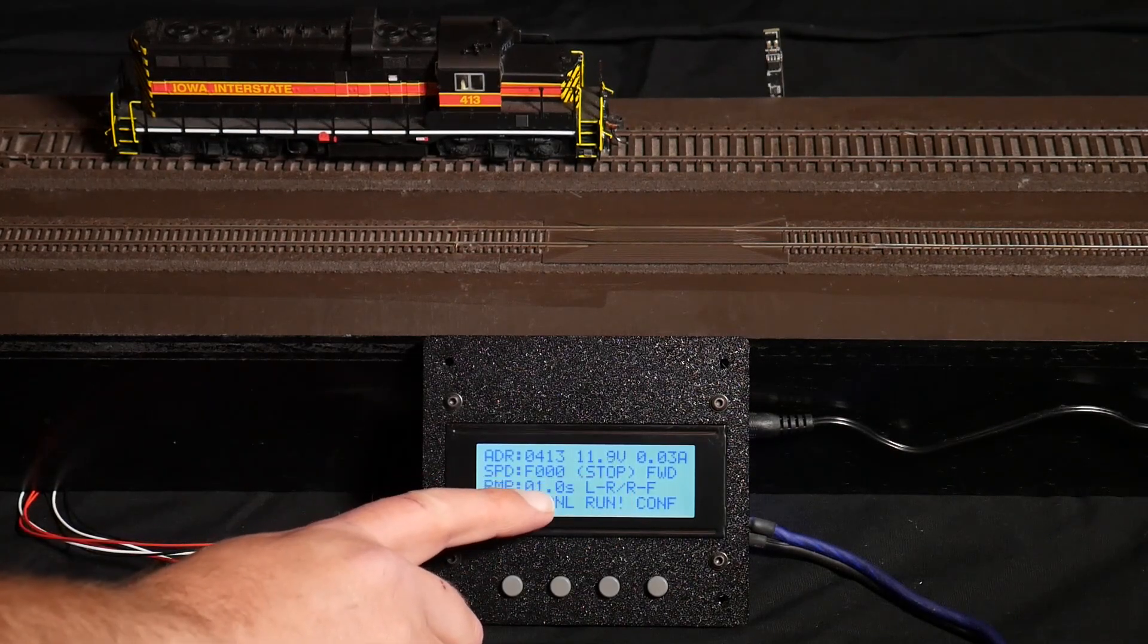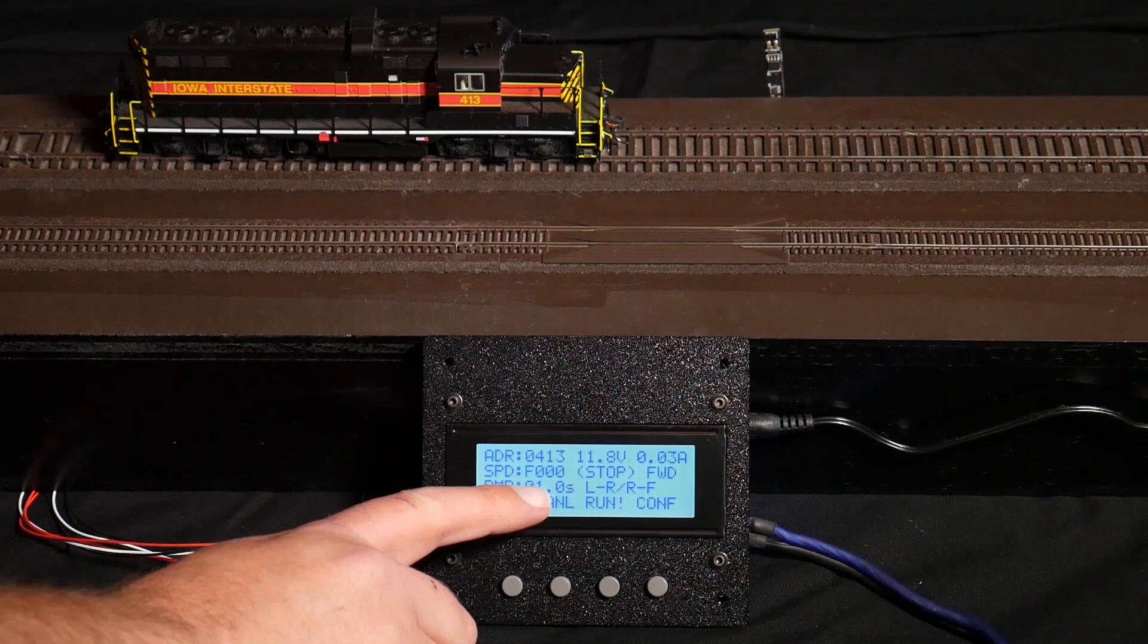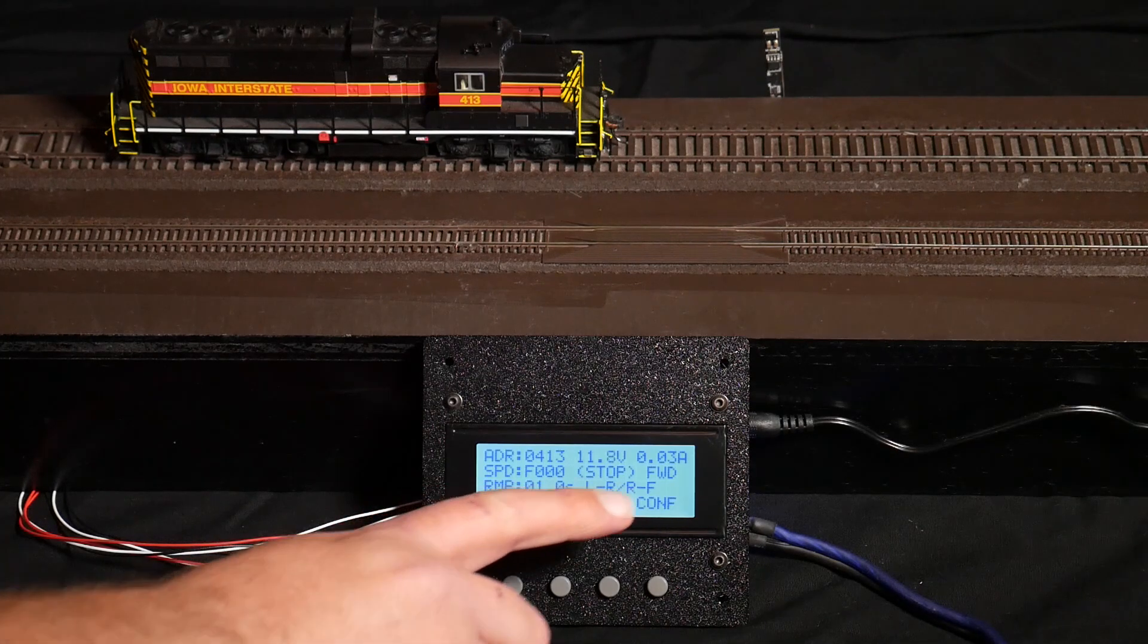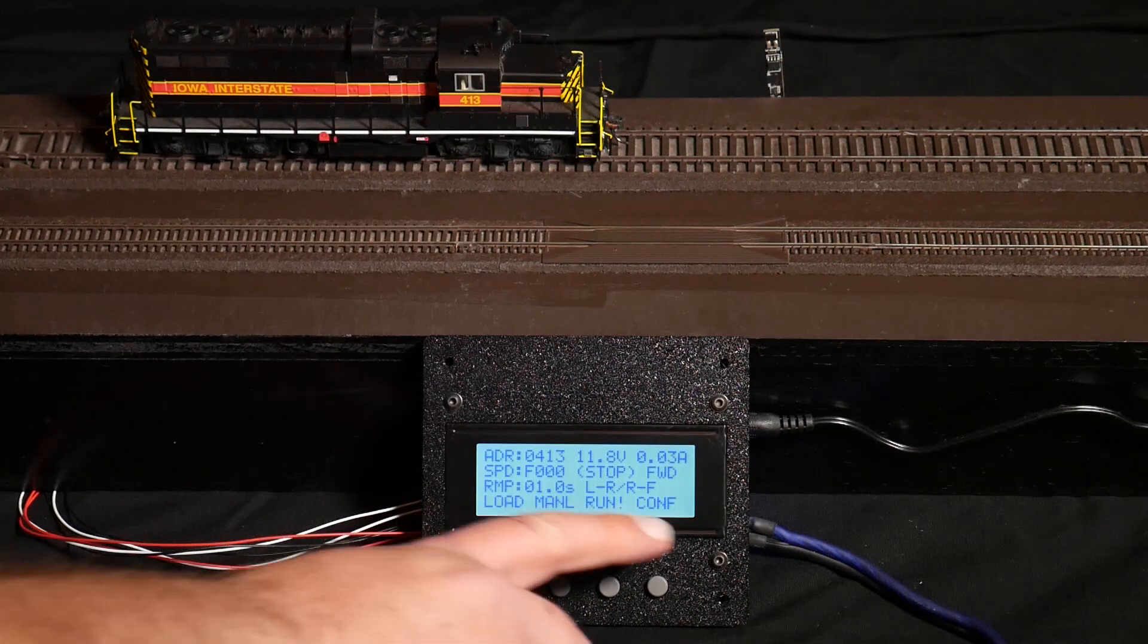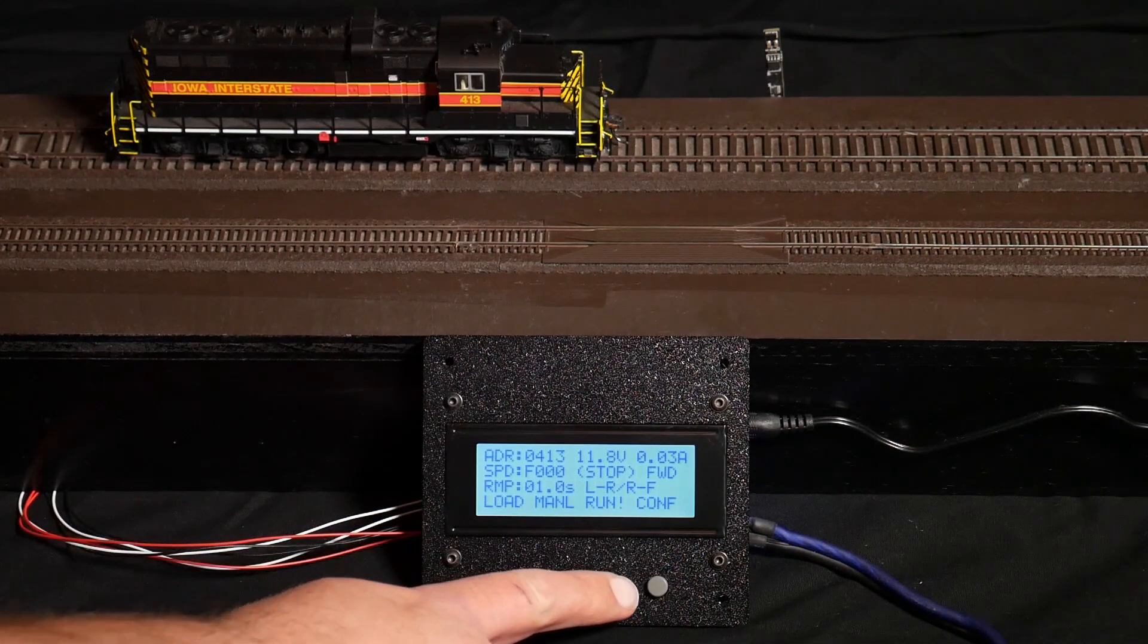I have a ramp rate of one second from full stop to the maximum configured speed. Neither sensor is tripped, and I have four options down here. I have it stopped at the moment.